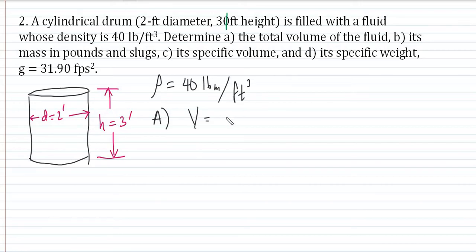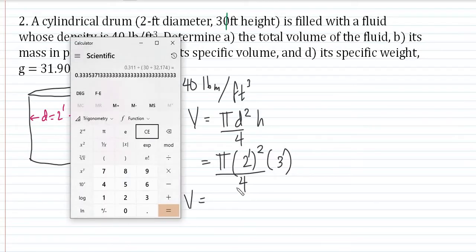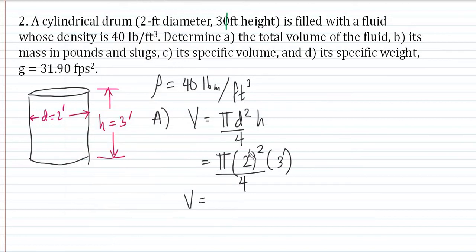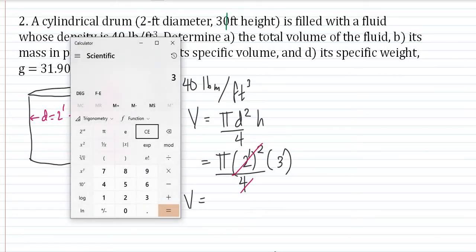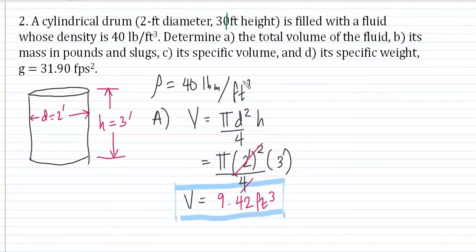Letter A: find the total volume. Volume equals area of the base times height. Since the base is circular for a cylindrical drum, area equals pi·d²/4. So volume equals pi times 2 squared over 4, times 3. Since 2 squared is 4, those cancel numerically, simplifying to 3 times pi, which equals 9.42 cubic feet. That is the volume of the drum.